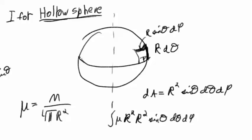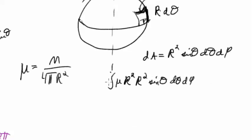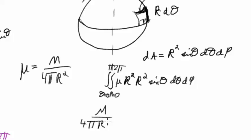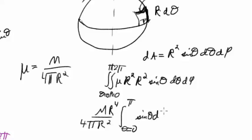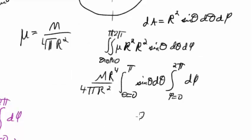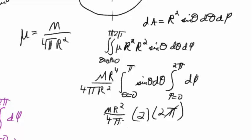We take the integral of mu times R squared times the differential surface area sine theta d-theta d-phi, as a double integral with theta going from 0 to pi and phi from 0 to 2 pi. Copying down our constant m over 4 pi R squared, and taking out R to the fourth, we have the theta integral of sine theta d-theta and the phi integral of d-phi. The phi integral from 0 to 2 pi is just 2 pi.